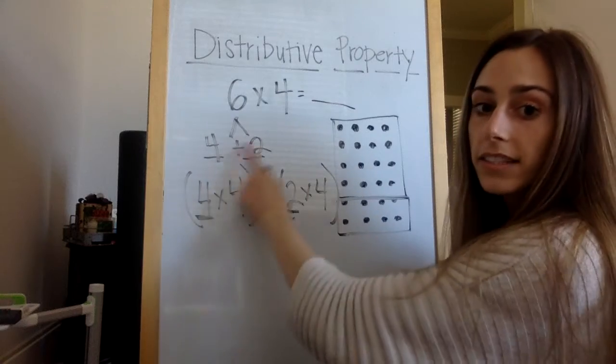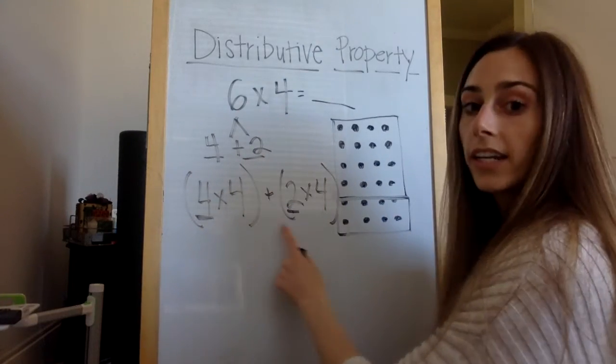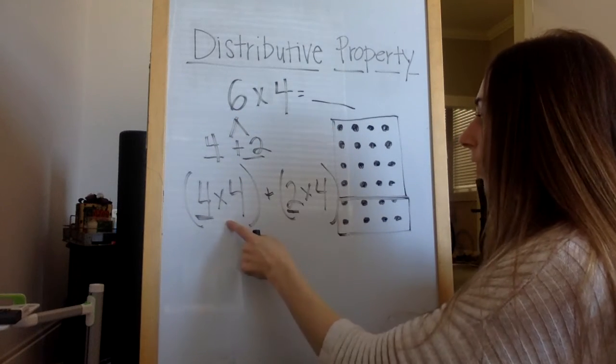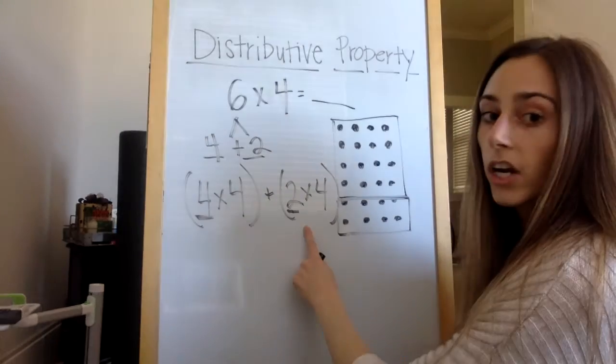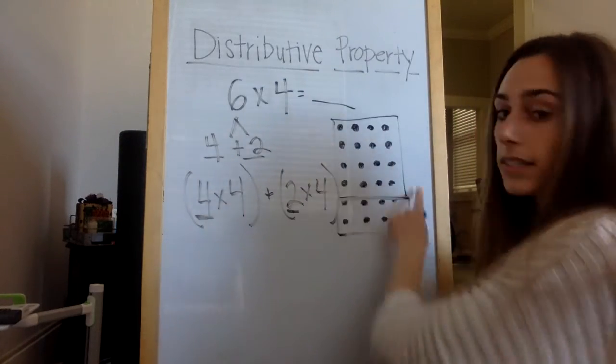I essentially have the same exact problem as six times four here and just writing it in a different way. Instead of doing six times four, I'm doing four rows of four and two rows of four. I know that if I multiply these and then add them correctly, it should equal the same thing.